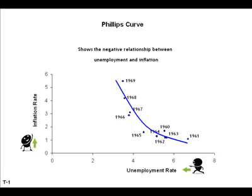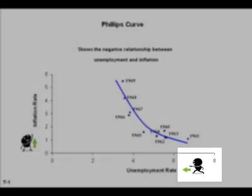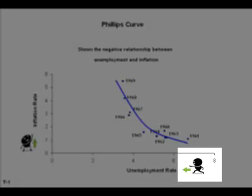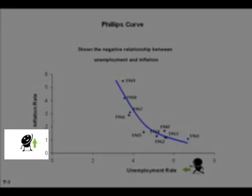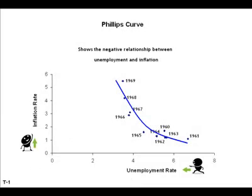Using data from the 1960s, I have plotted the Phillips curve seen here. Phillips observed that when unemployment was high, inflation was low. When inflation was high, unemployment was low. This negative relationship is known as the Phillips curve.